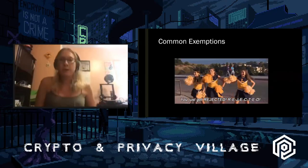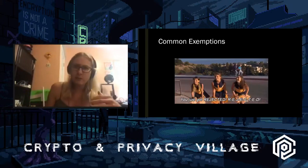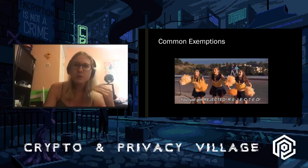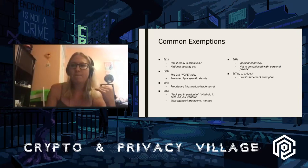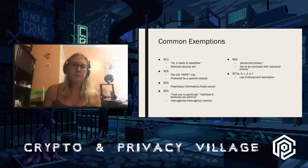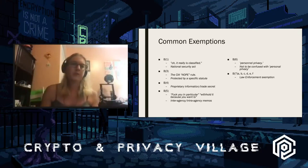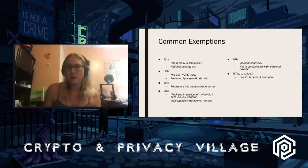Exemptions. Just because you ask the government for something doesn't mean they'll give it to you — they'll usually deny through exemptions. You tend to see exemptions more with national security organizations. Common ones include B1, which means the information is really classified under the National Security Act — it may come as a redaction with a big white box in the document and the exemption listed in the margin. B3 is the CIA's 'nope' rule, protected by a very specific statute in law.